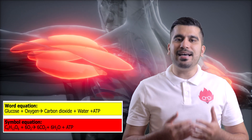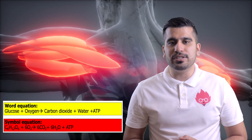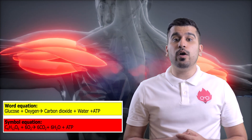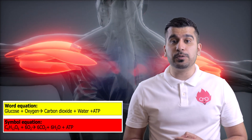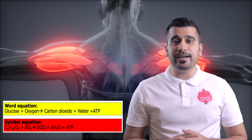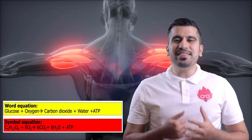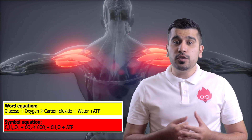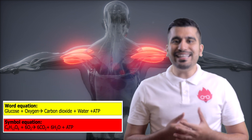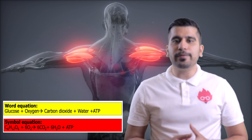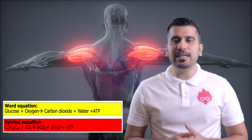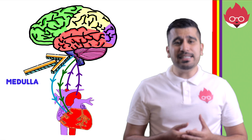During exercise, there's an increase in the oxygen demand, especially in your muscles that need the oxygen to carry out aerobic respiration to have the energy to contract. To supply your muscles with this oxygen, your heart must beat faster. An increase in heart rate also allows for waste products to be removed.